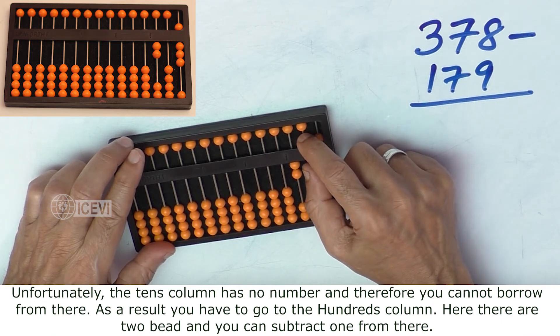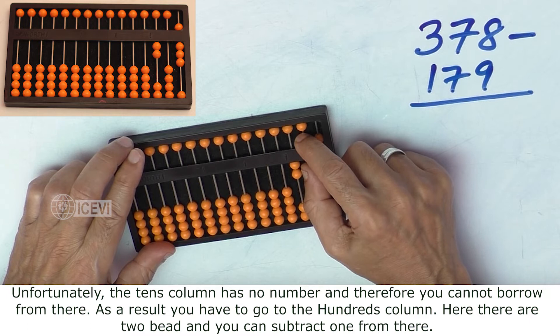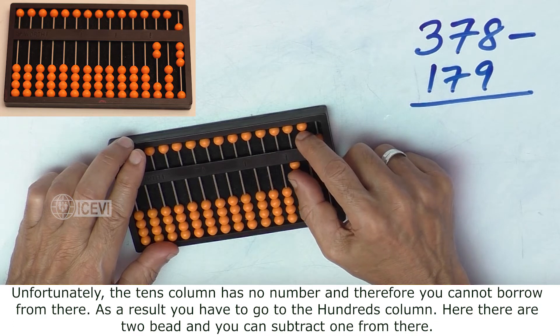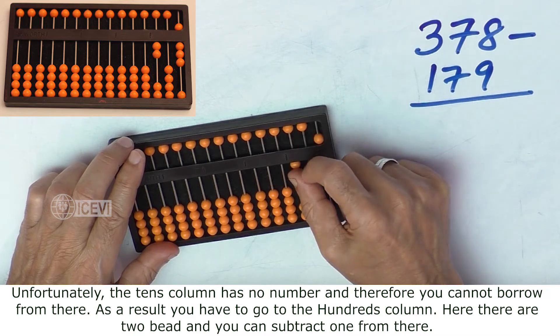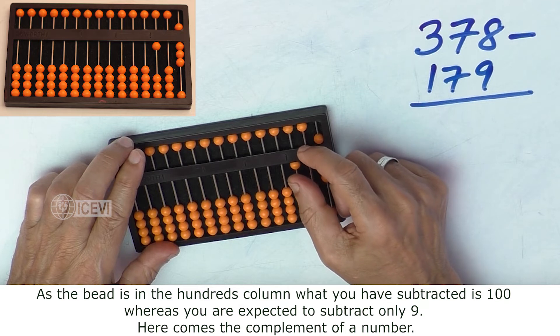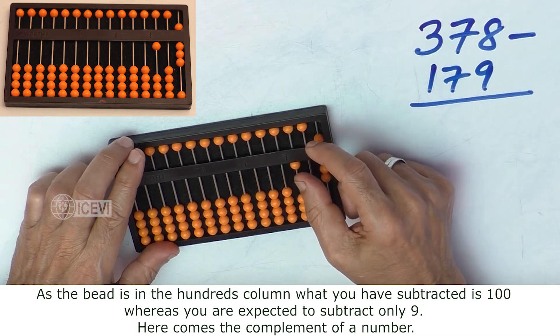Unfortunately, the tens column has no number and therefore you cannot borrow from there. As a result you have to go to the hundreds column. Here there are 2 beads and you can subtract 1 from there. As the bead is in the hundreds column, what you have subtracted is 100.